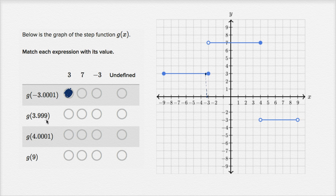g(3.99999). 3.99999, almost 4. So let's draw the dotted line right over here. It's going to be almost 4. Well, g(3.99999) is going to be 7. We see that right over there. So that is equal to 7.